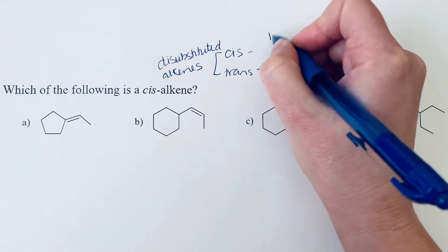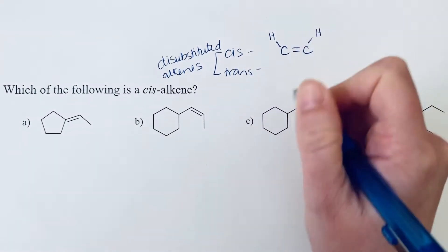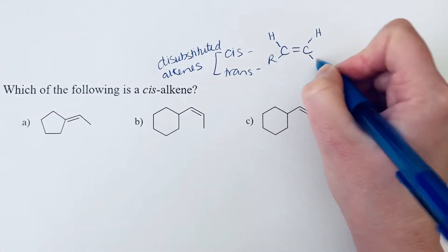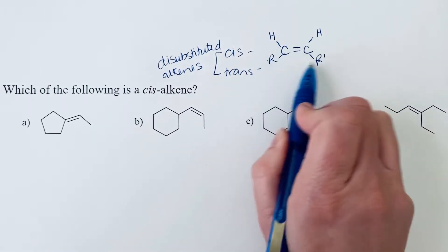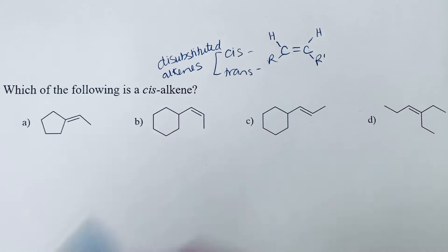So if your hydrogens are on the same side, and now here would be your substituents, right? So that's why we say it's disubstituted. There's two substituents on those alkene carbons. If they are on the same side, then that is cis.